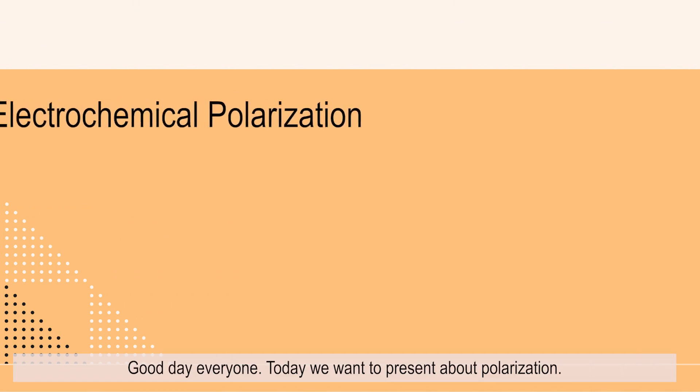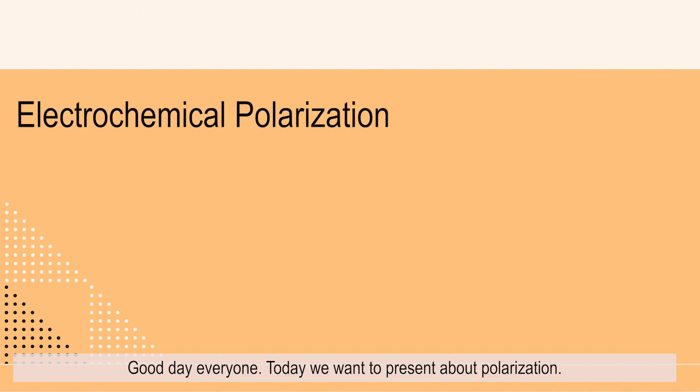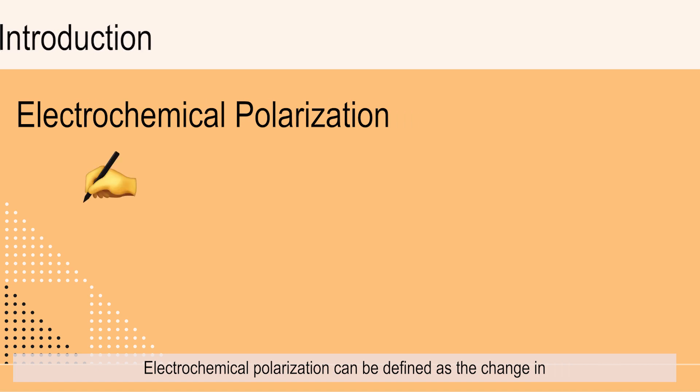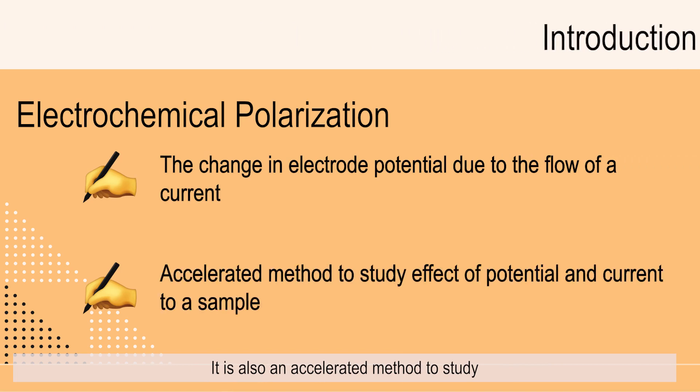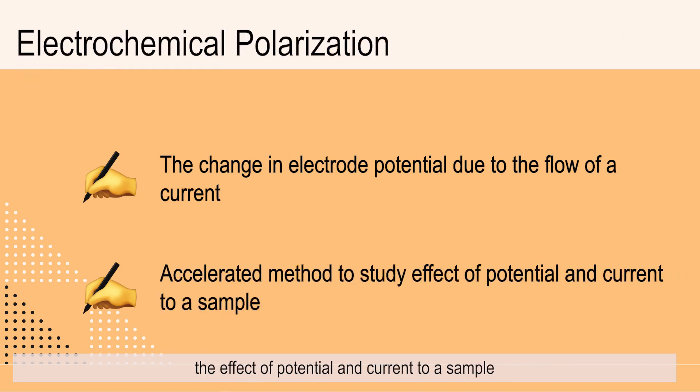Good day everyone. Today we want to present about polarization. Electrochemical polarization can be defined as the change in electrode potential due to the flow of a current. It is also an accelerated method to study the effect of potential and current to a sample.